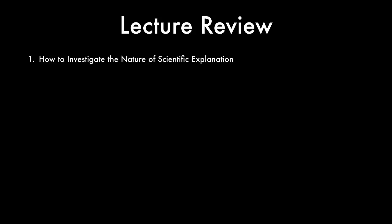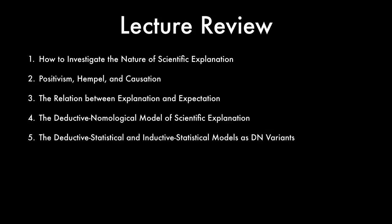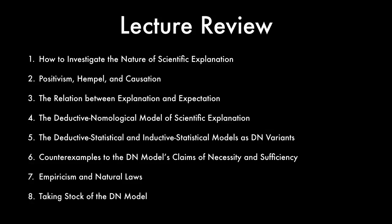In this lecture, we've covered eight topics: one, how to investigate the nature of scientific explanation; two, positivism, Hempel, and causation; three, the relation between explanation and expectation; four, the deductive-nomological model of scientific explanation; five, the deductive-statistical and inductive-statistical models as deductive-nomological variants; six, counterexamples to the DN model's claims of necessity and sufficiency; seven, empiricism and natural laws; and eight, taking stock of the DN model. Thank you.